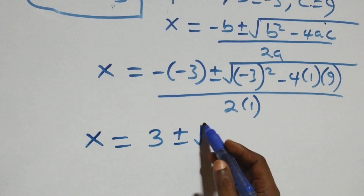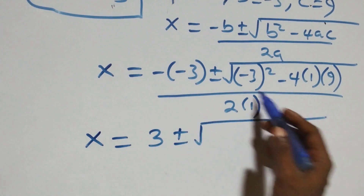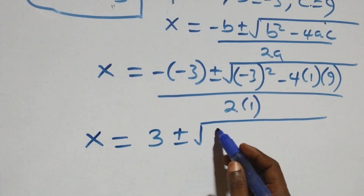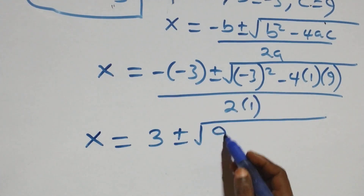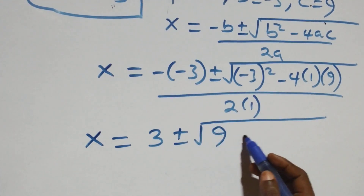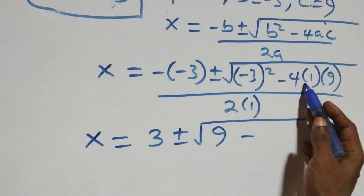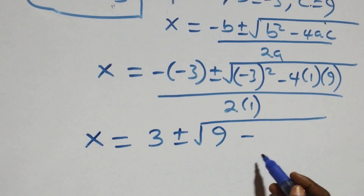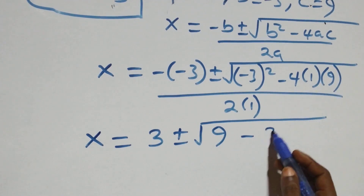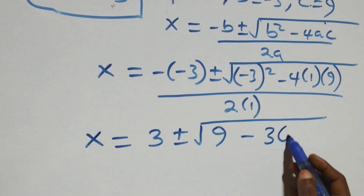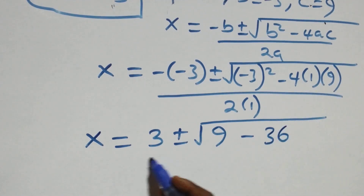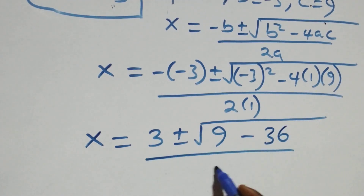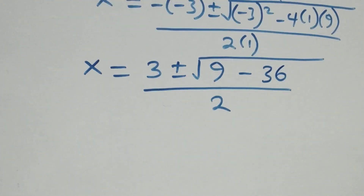We have x equals 3 plus or minus square root of minus 3 squared, which is 9, minus 4 times 1 times 9, which gives 36, all over 2.